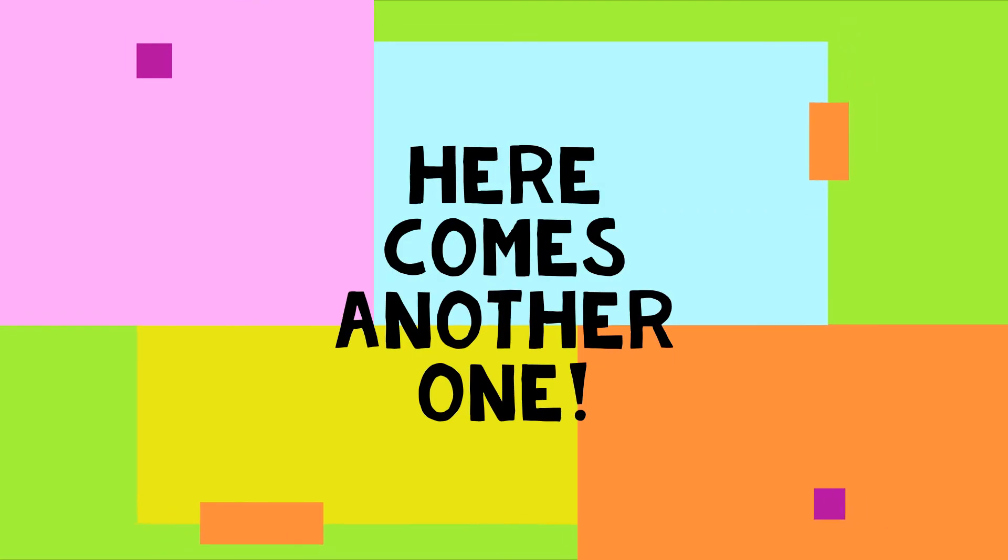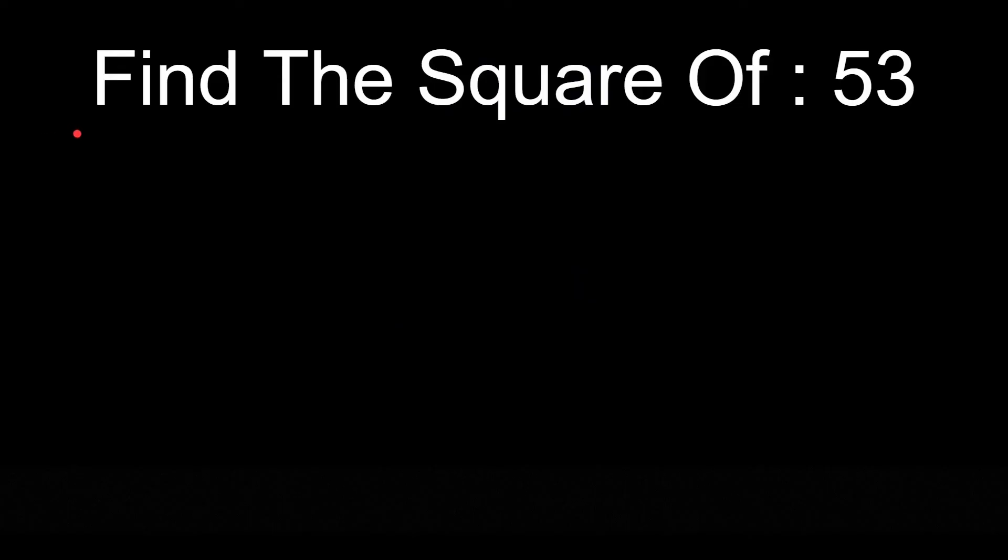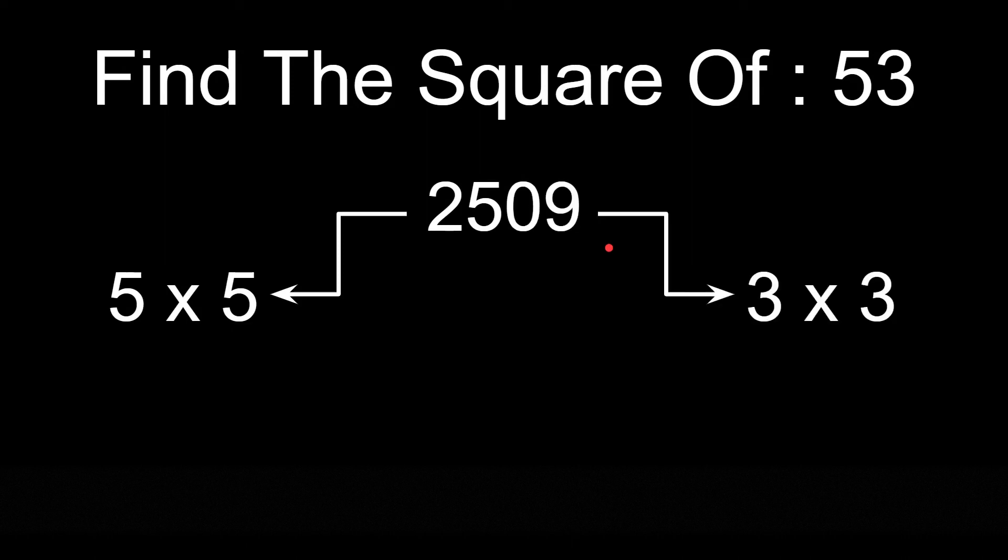Here comes another one. In this example we have to find the square of 53. So the steps are same. We will write the square of 5, 25, and square of 3, 09.